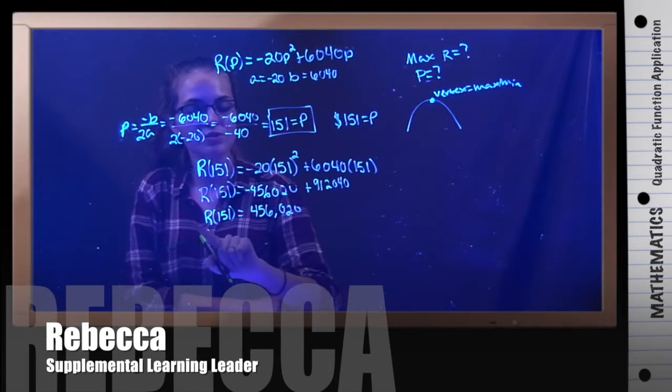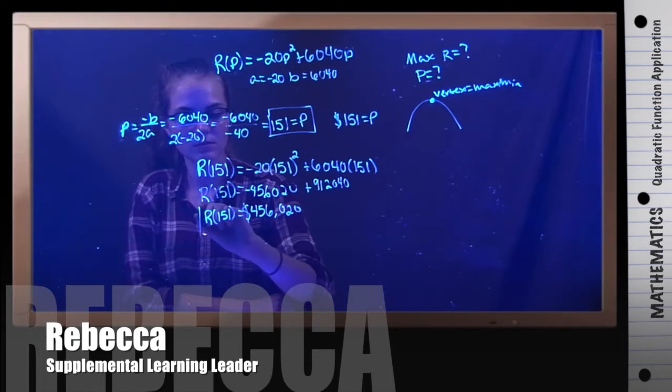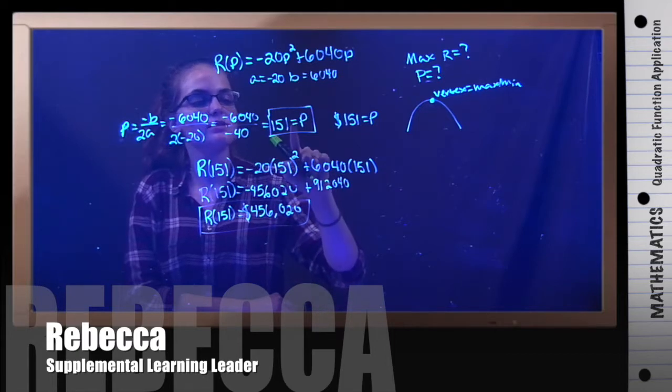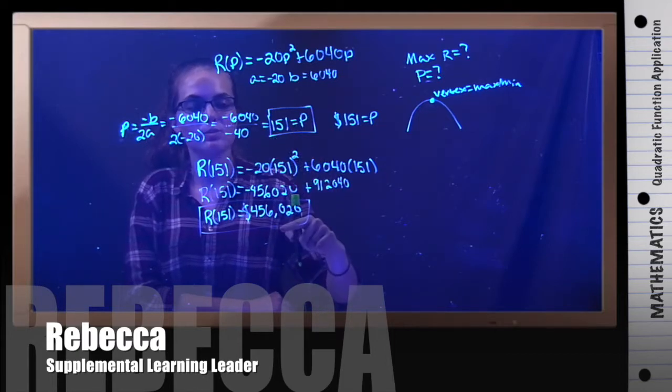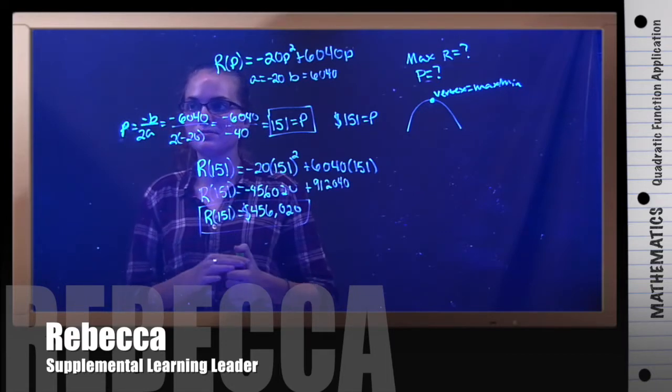This is revenue, so it's in dollars. This is the maximum amount of revenue, and this is the price in order to get the maximum revenue. That's our final answer. Thank you.